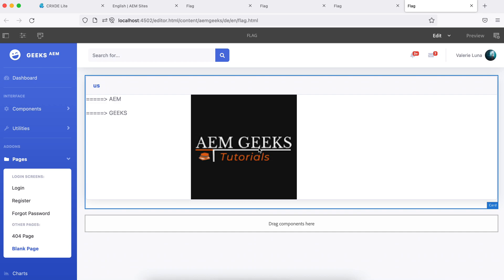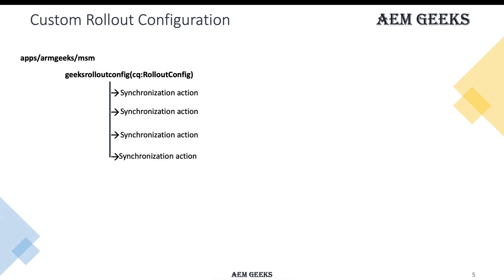Now let's understand how to create a custom rollout configuration and how it can resolve this issue. To create a custom rollout configuration, you should create a node of type 'cq:RolloutConfig' and inside that you must have your actions. The developer's way is to copy-paste a node from an existing rollout configuration and rename it as per your need. Let me show you where the out-of-box configurations are and where you need to create yours.